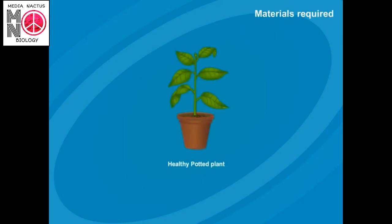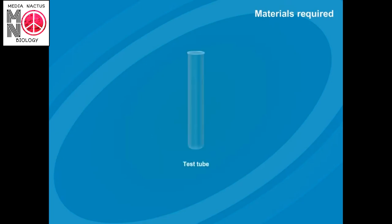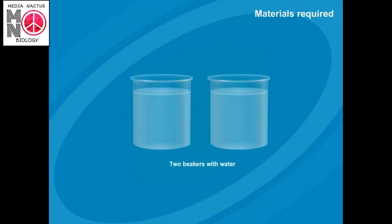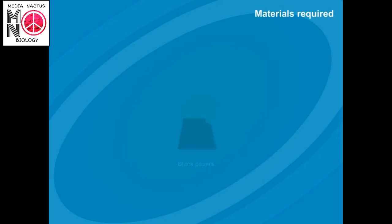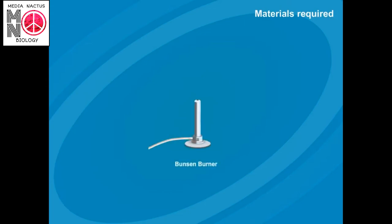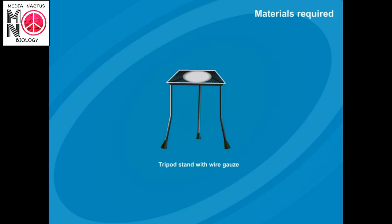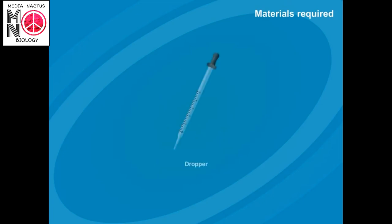Materials required to show that sunlight is necessary for photosynthesis: a healthy potted plant, watch glass, test tube, two beakers with water, iodine solution, alcohol, black papers, Bunsen burner, forceps, tripod stand with wire gauze, and dropper.